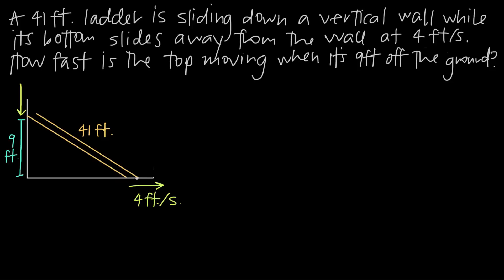We have a 41-foot ladder sliding down a vertical wall, here's our vertical wall, and the ladder is sliding down the wall, as indicated by this green arrow, while its bottom slides away from the wall. Of course that makes sense — if the top is sliding down, that's going to push the bottom out to the right. So the ladder is sliding away from the wall at four feet per second.